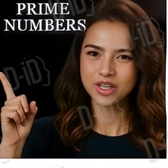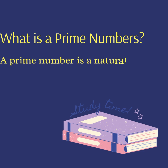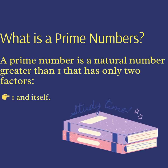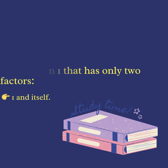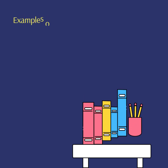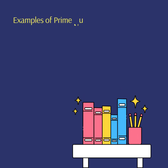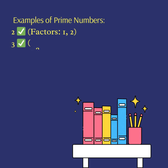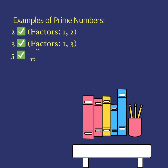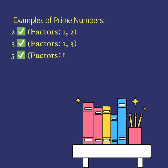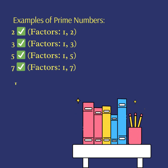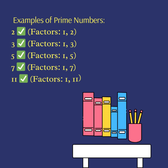Today we will learn about prime numbers. A prime number is a natural number greater than one that has only two factors: one and itself. Examples of prime numbers: two has factors one and two; three has factors one and three; five has factors one and five; seven has factors one and seven; eleven has factors one and eleven.